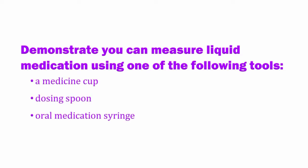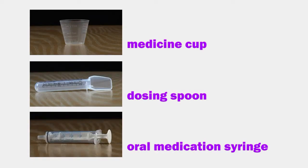The second demonstration is called the liquid measuring competency. You will be asked to show that you can measure liquid medication using one of the following administration tools: a medicine cup, dosing spoon, or an oral medication syringe. This test evaluates your ability to accurately measure liquid medication — you will not need to show all the steps for giving medication safely. You will randomly select a tool, and your MAT trainer will tell you the dose to measure. If needed, you may be given a second chance.